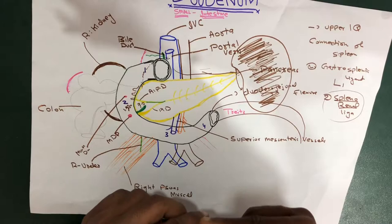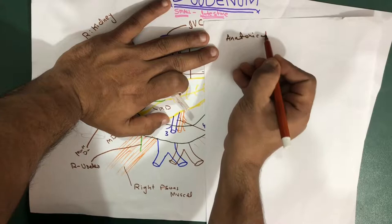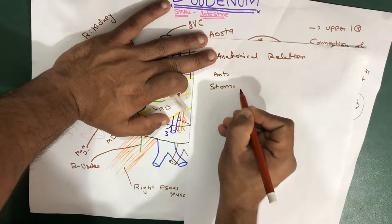Let's further talk about the spleen. Now we talk about the anatomical relations of the spleen. Anteriorly — I have just told you — anterior to the spleen, we have got the biggest structure, which is the stomach. Anteriorly, we have the stomach.